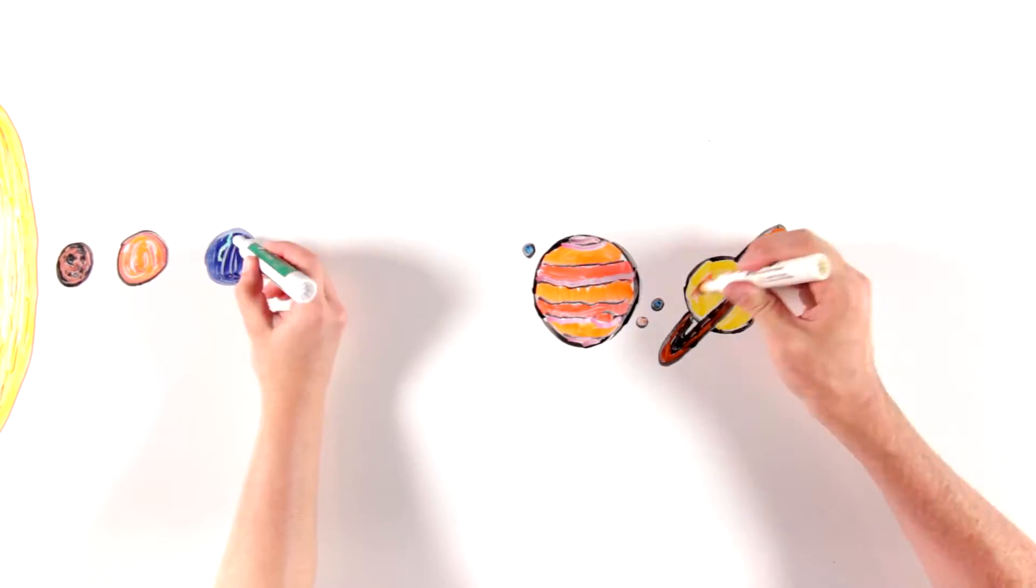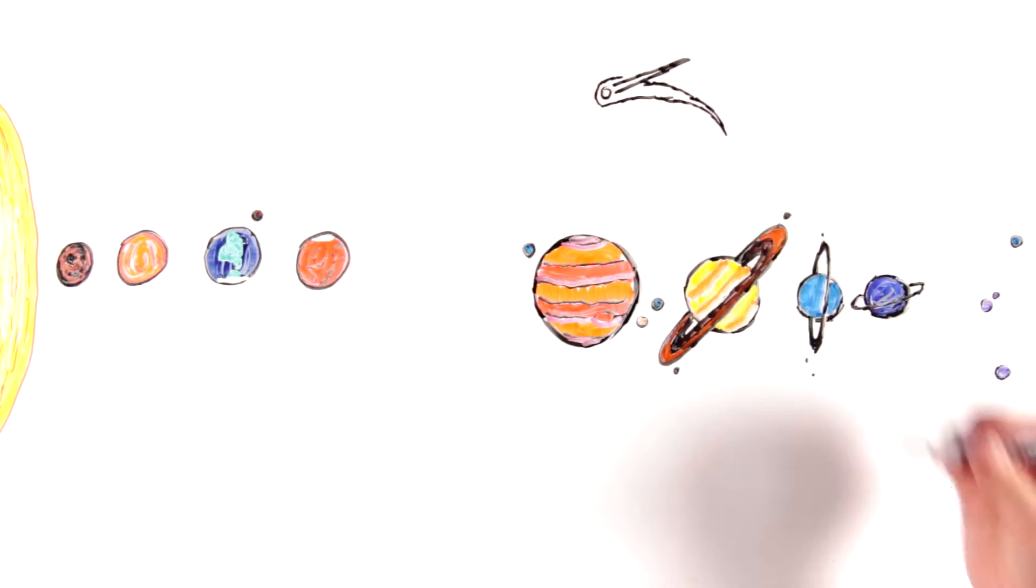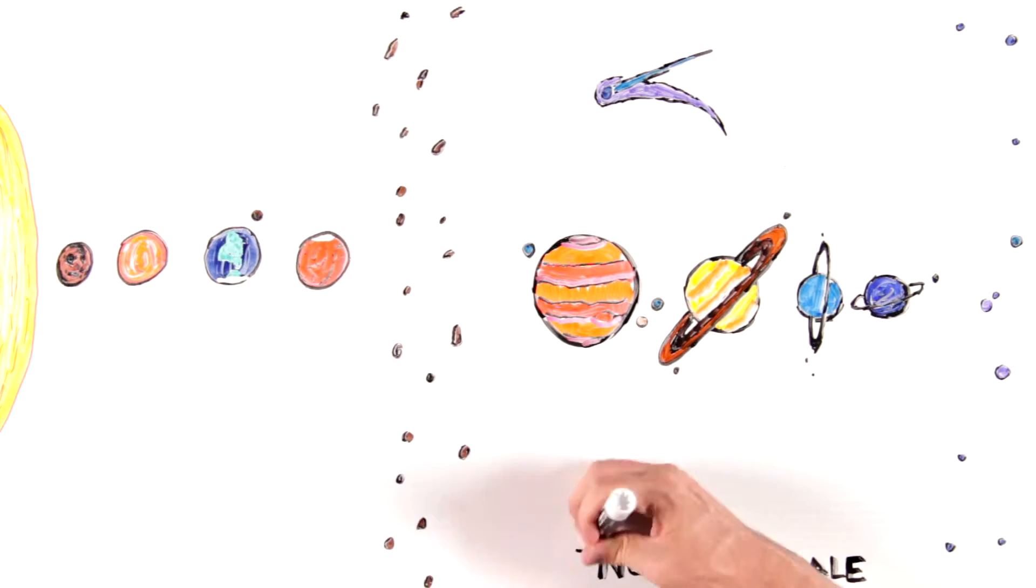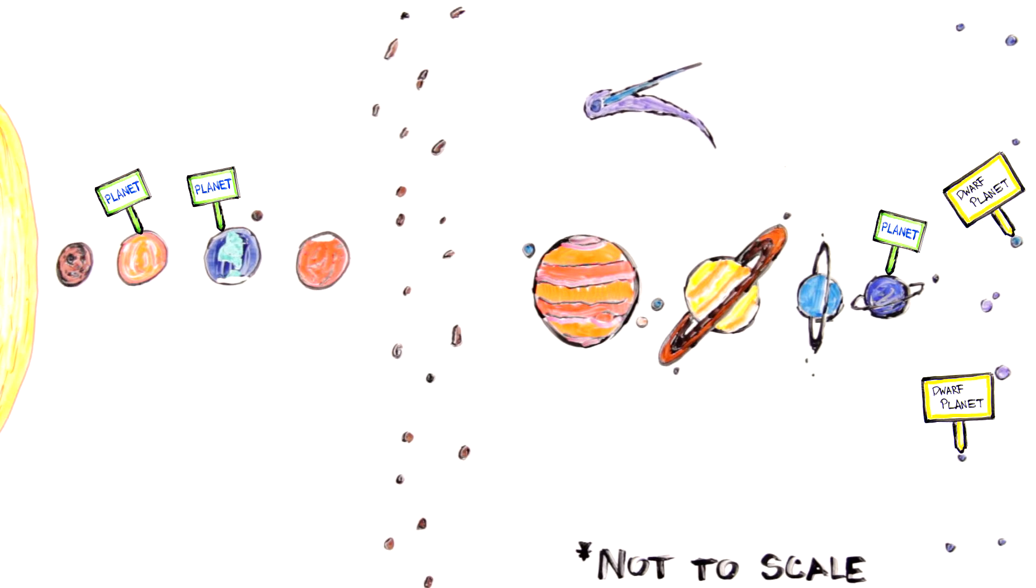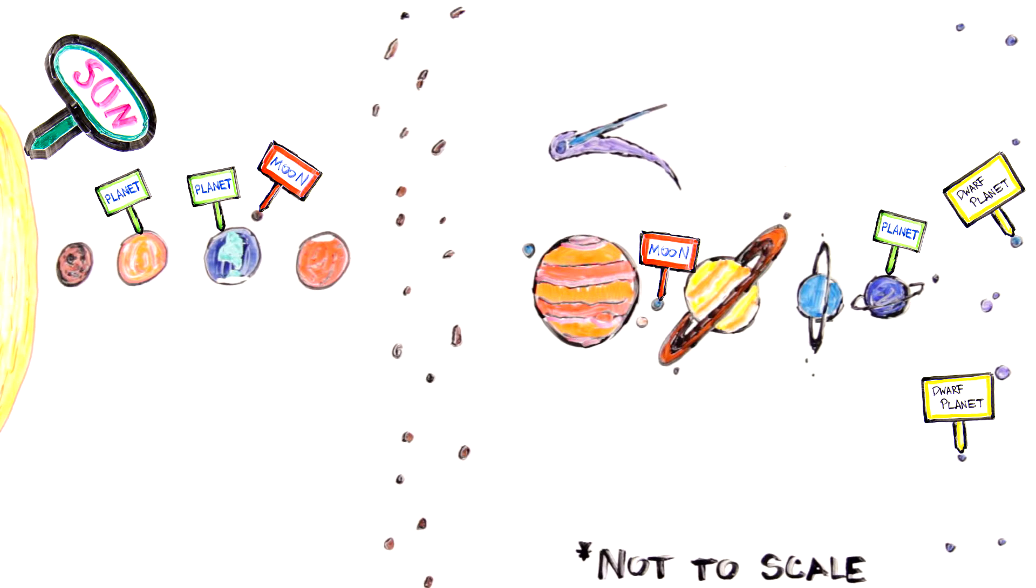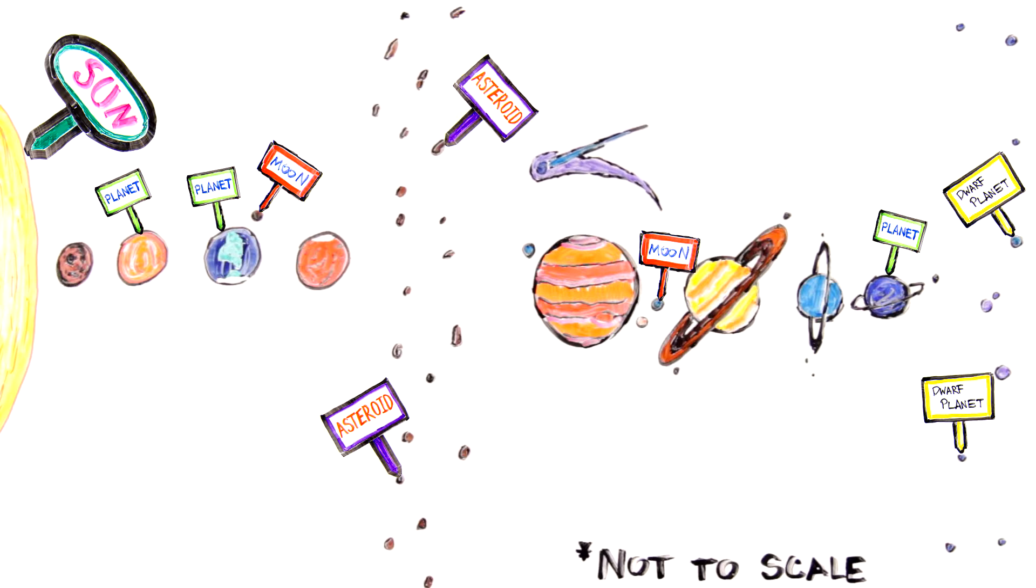There are many objects in the solar system. How do astronomers tell one from another? We have planets and dwarf planets which orbit the sun, moons which orbit planets, and small bodies we call asteroids and comets. Scientists classify these objects based on their locations, characteristics, and behavior.